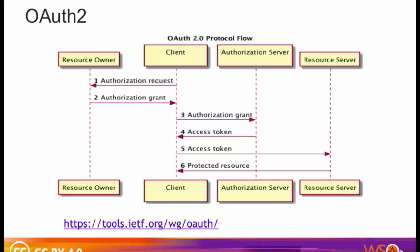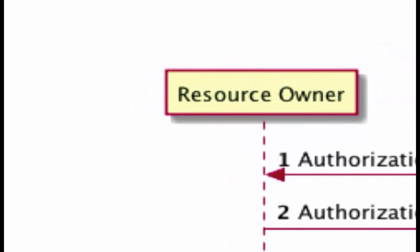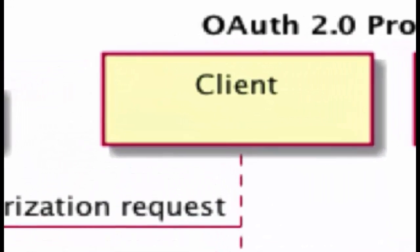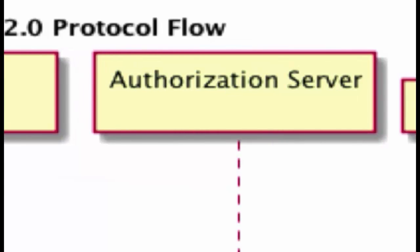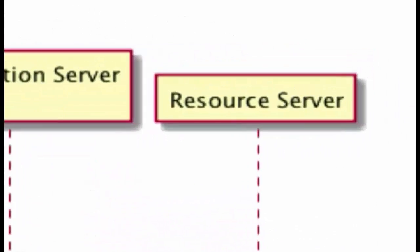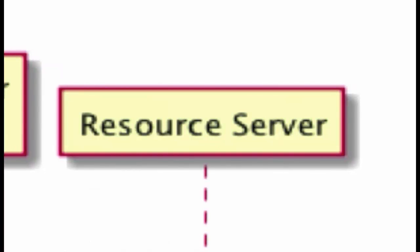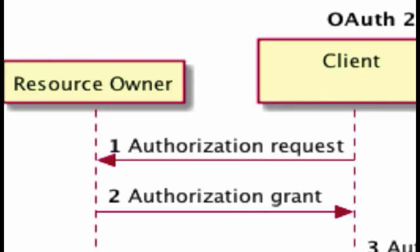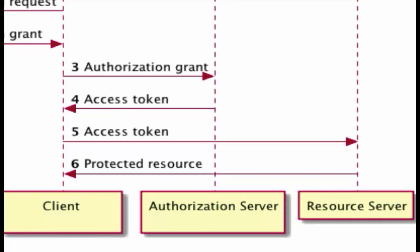OAuth 2.0 defines four roles. The resource owner is an entity capable of granting access to a protected resource, such as an end user. A client is an application making protected resource requests on behalf of the resource owner and with its authorization. The authorization server issues access tokens to the client after successfully authenticating the resource owner and obtaining authorization. The resource server hosts the protected resources and responds to protected resource requests using access tokens. The client sends an authorization request to the resource owner, receives an authorization grant, sends it to the authorization server, receives an access token, and uses it to access the resource server, which responds with the protected resource.